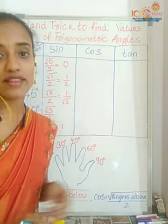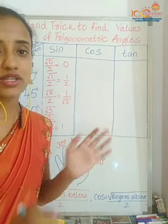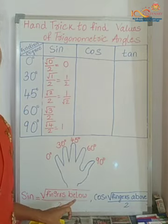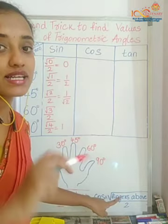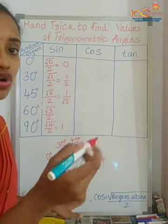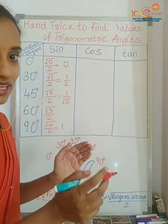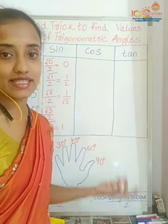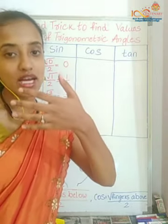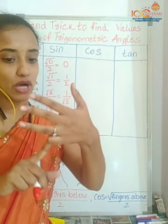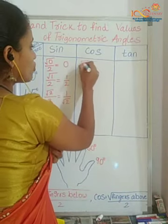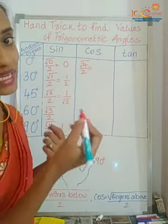Using the same method we can find the values of all the cosine functions. The only difference is: for sine the formula was root of fingers below divided by two, but for cosine the formula is root of fingers above divided by two. Remember — sine is below, cosine is above. Now let's find cos 0. The 0-degree finger is the little finger. Cosine means above, so how many fingers do I have above? One, two, three, four. So it is root four by two, which equals one.